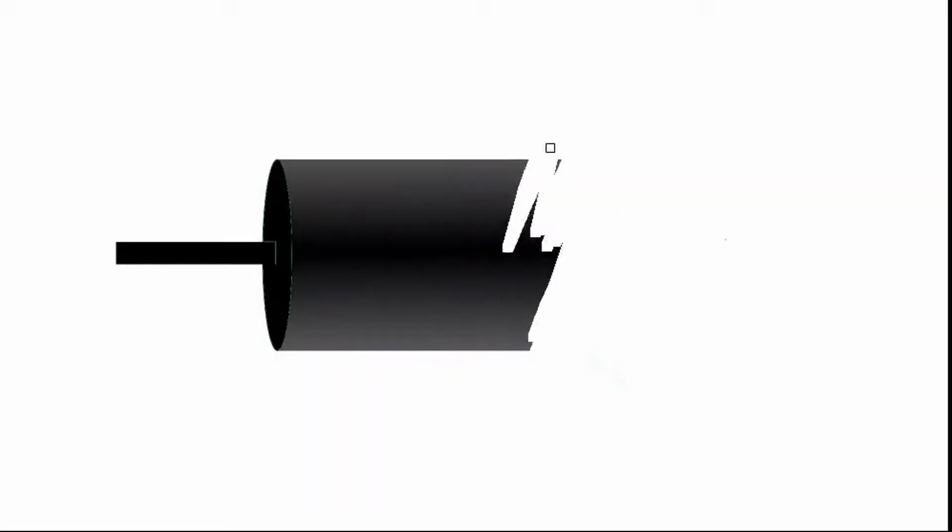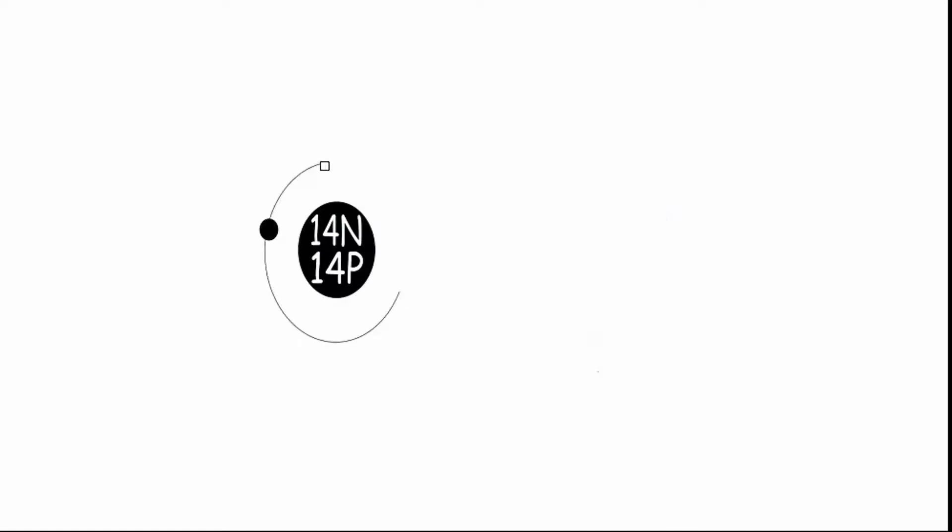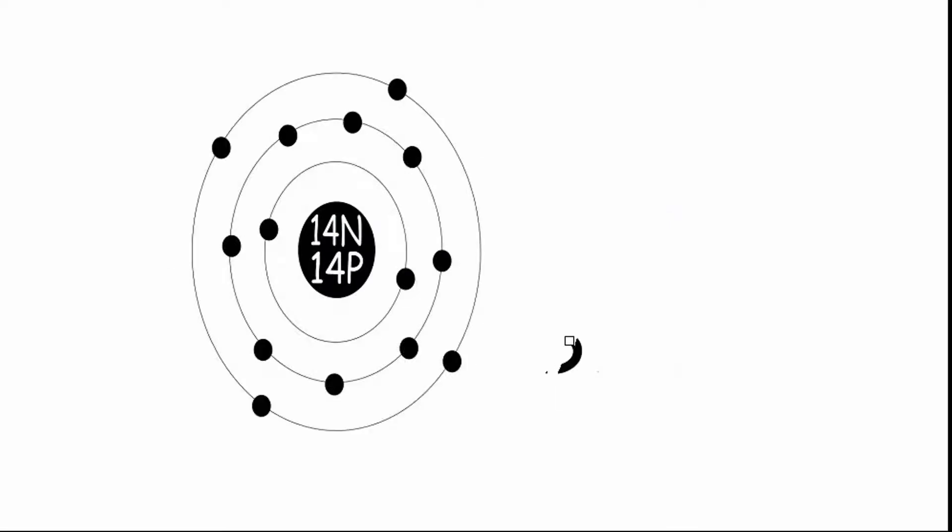P-N junction diode is formed by joining semiconductor materials, such as silicon. The atomic scale structure of silicon is shown here.